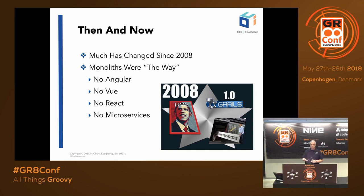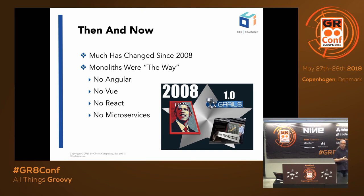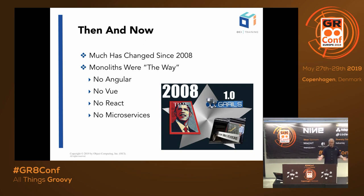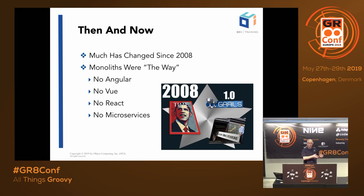Grails 3 is very different than Grails 1 was, because a lot has changed in the last decade around how people want to build JVM web applications. One example of that is REST. Certainly 10 years ago, the idea of REST existed and people did build REST services with Grails and had success with that, but REST was nowhere near as big a deal a decade ago as it is today. Today, every enterprise publishes REST services.